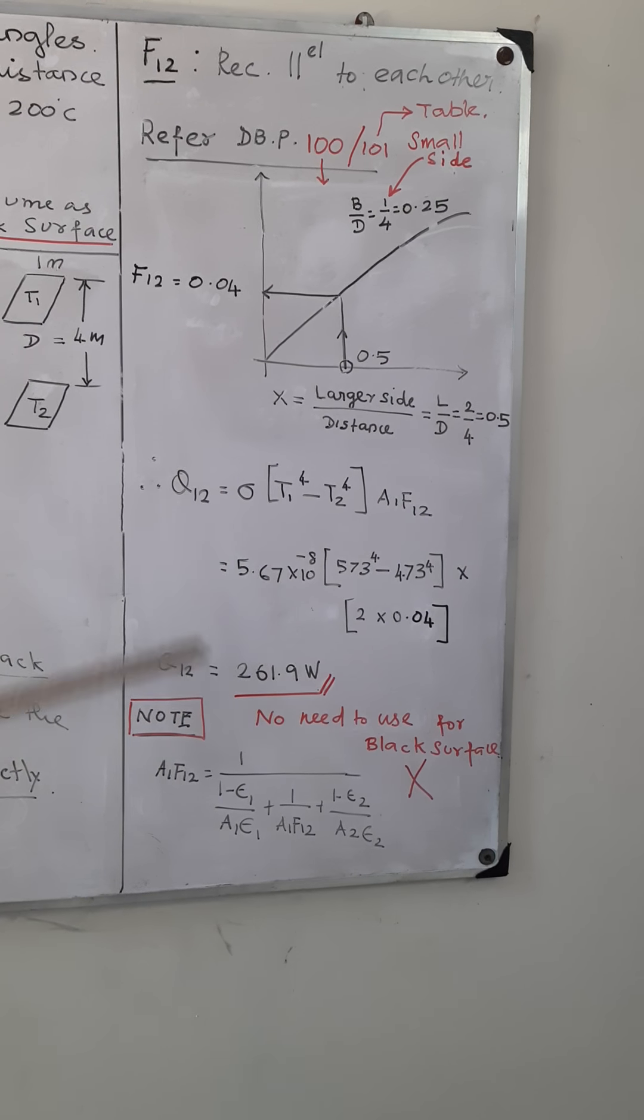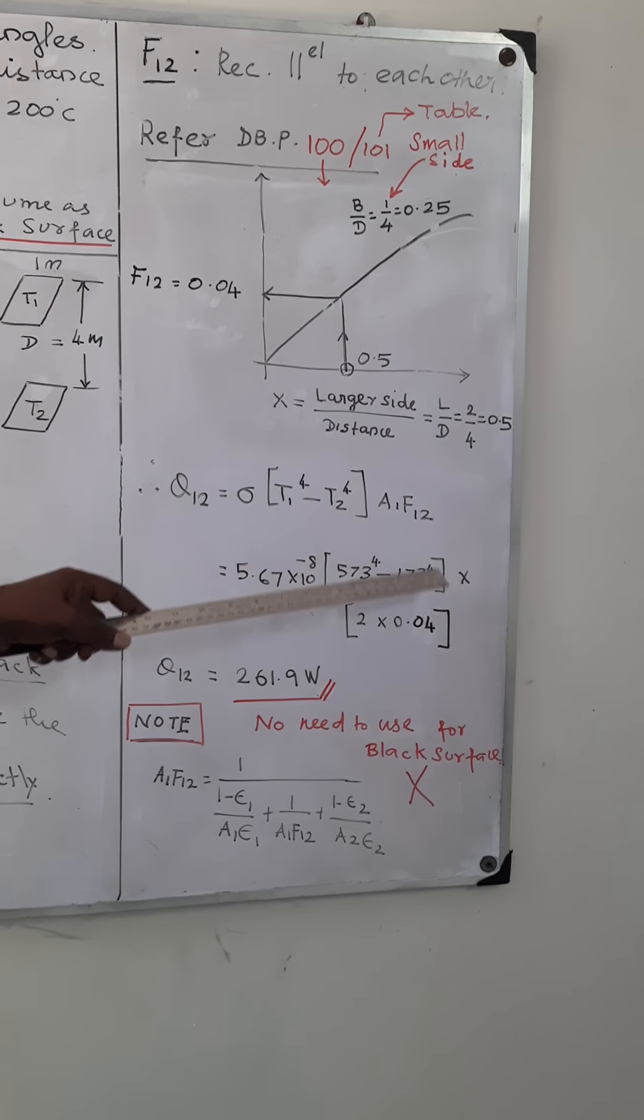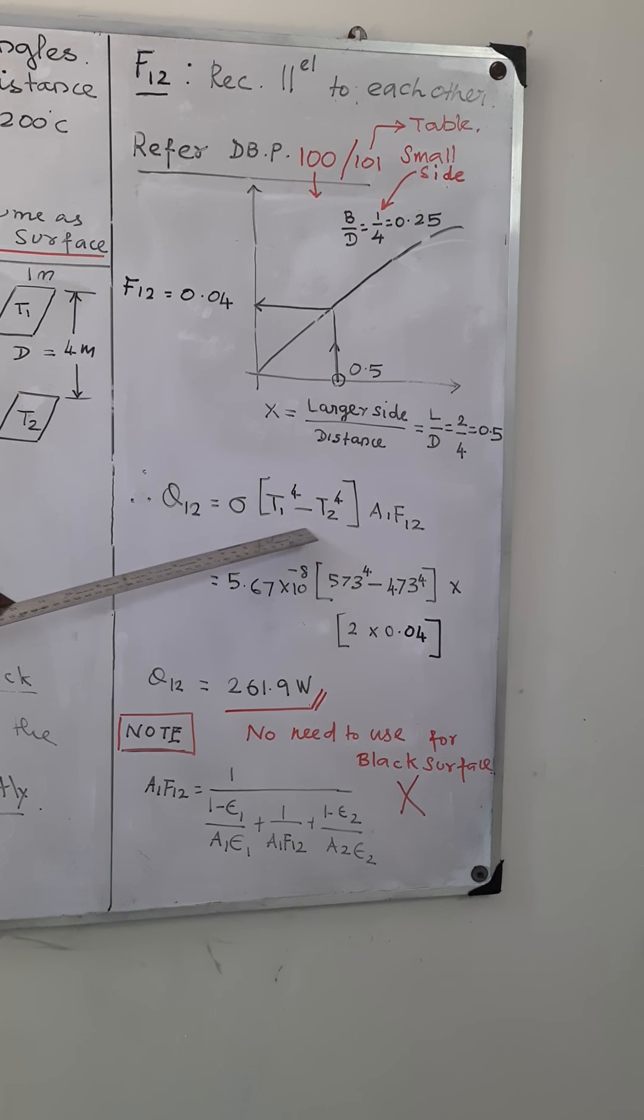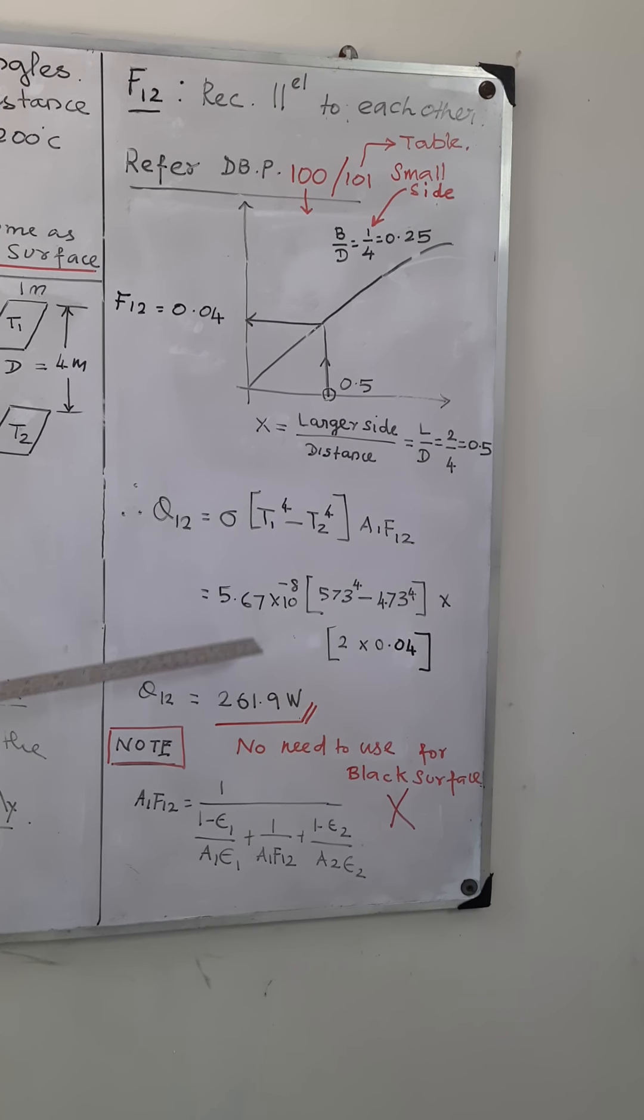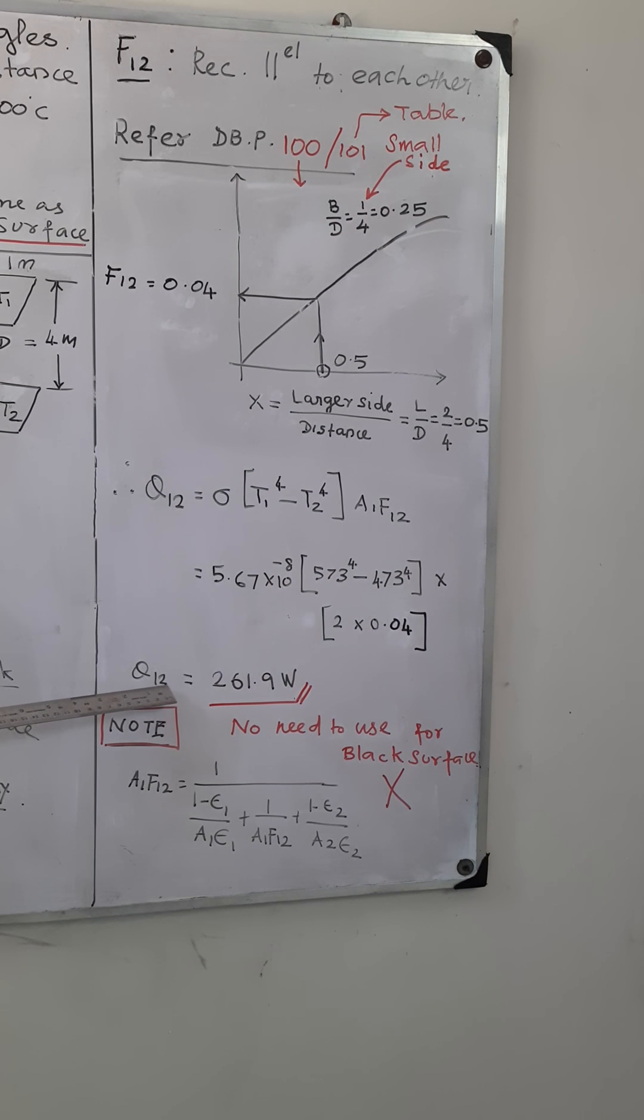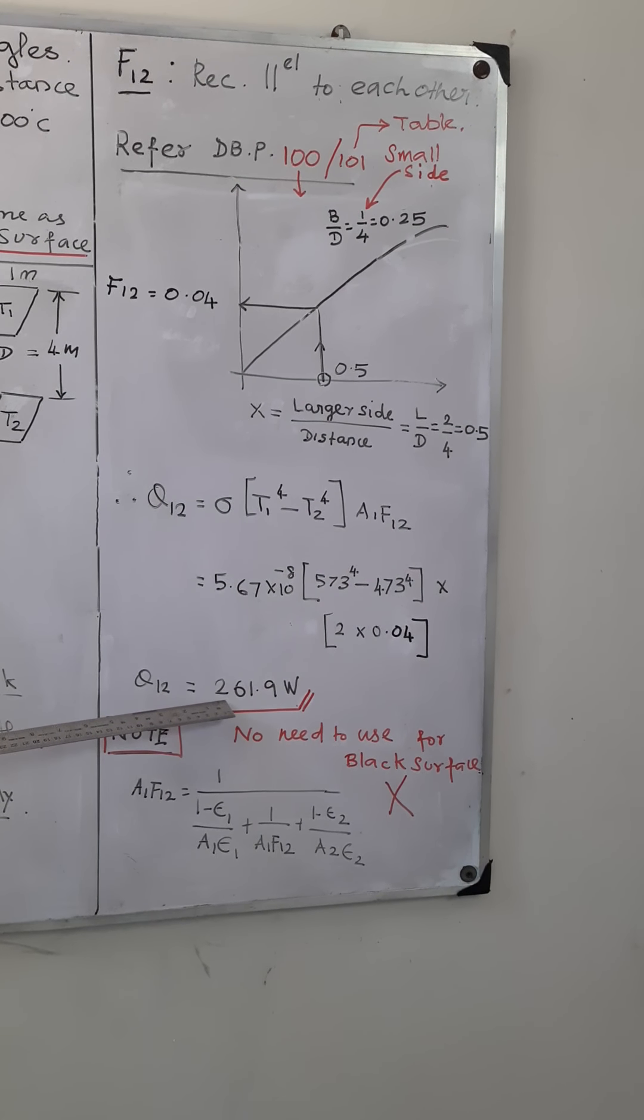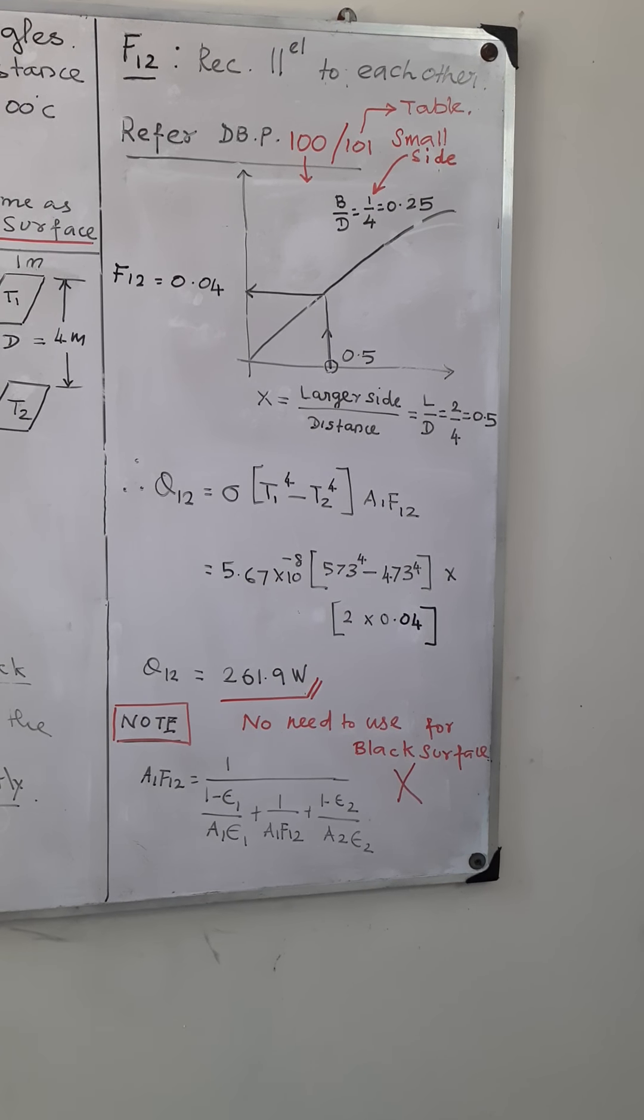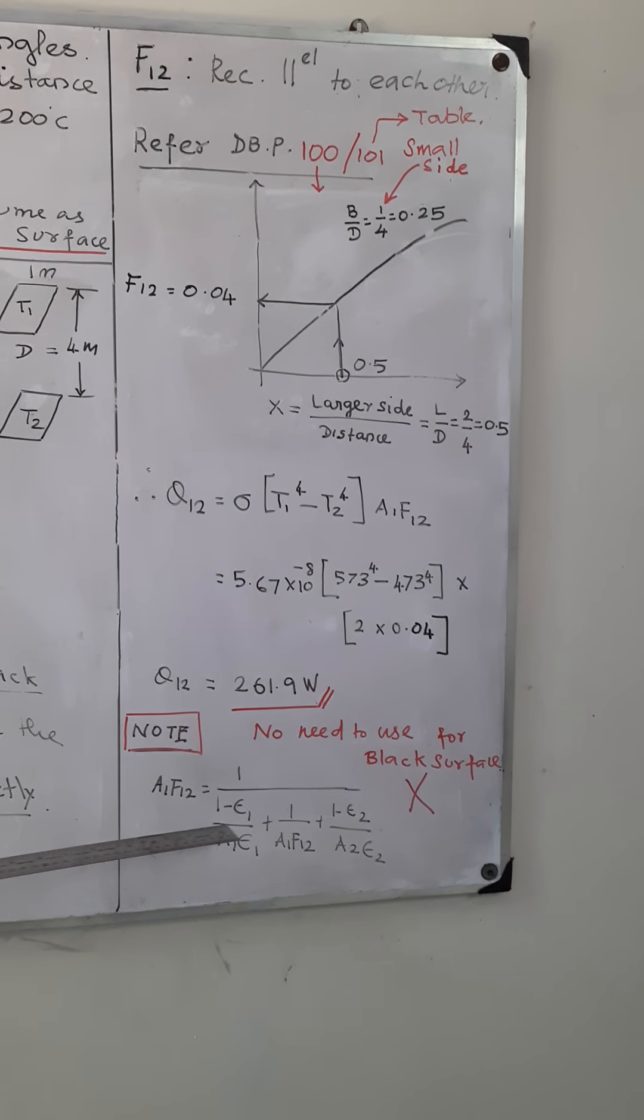That's the final formula. Shape factor is available as 0.04, area available 2 meter square, temperature available, and also the constant. So finally, you can get the heat transfer from one rectangle to another rectangle through radiation will be 261.9 watts.